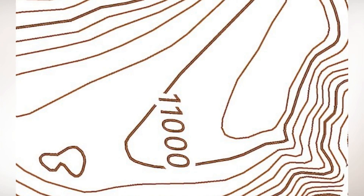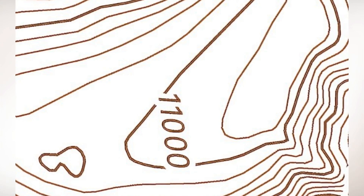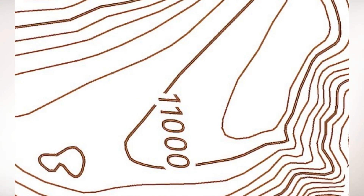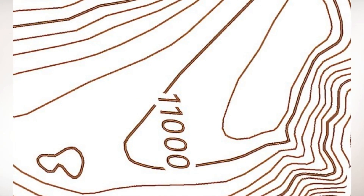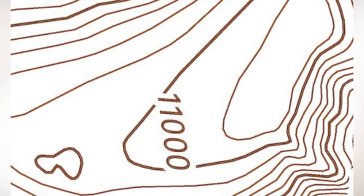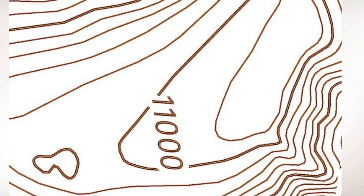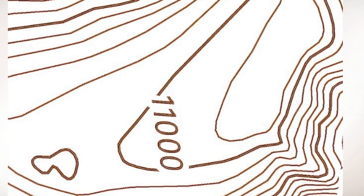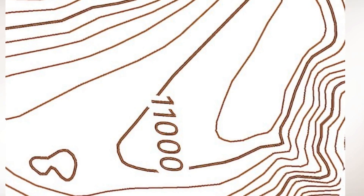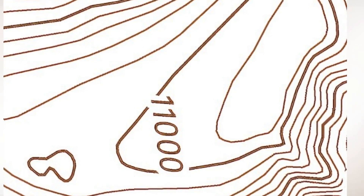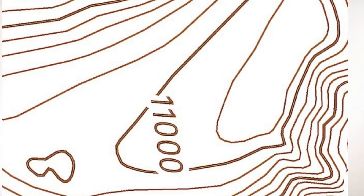Contour lines are always continuous and never intersect. They form closed loops around hills and valleys, and their spacing indicates the steepness of the terrain. Closer together, contour lines represent steeper slopes, while wider spaced contour lines represent gentler slopes.